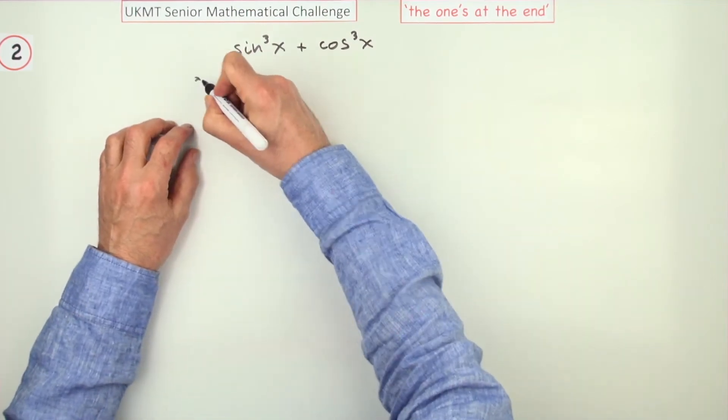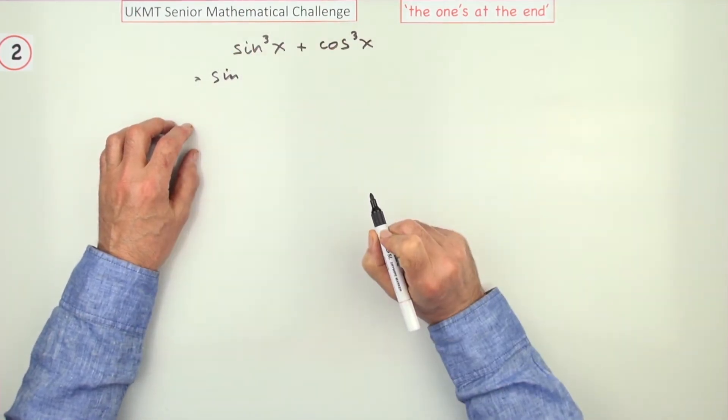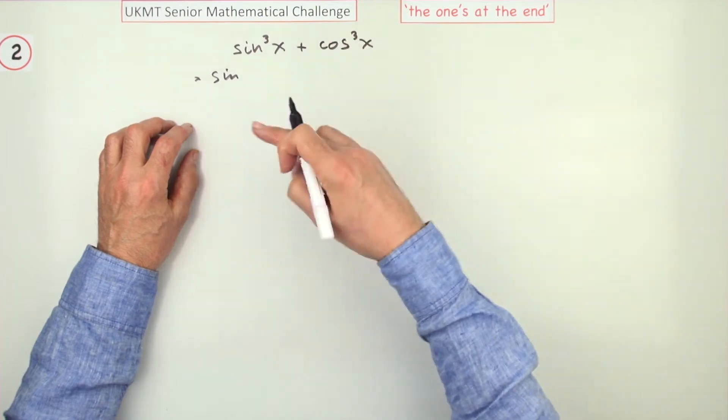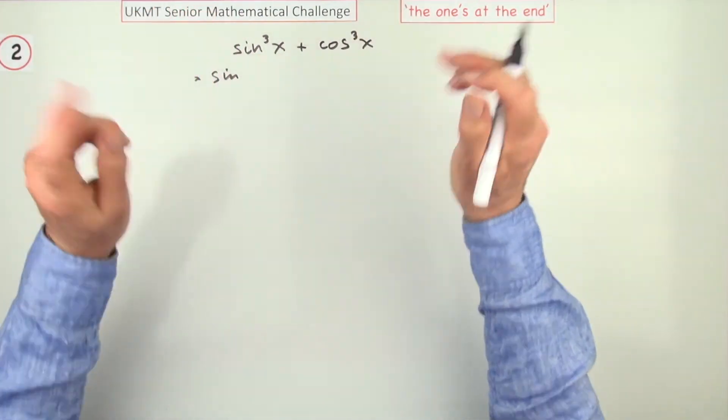Well, there's an obvious simple factorization there. You could take out sine squared because sine squared can be changed into cos squared. That'll give the two terms something in common.